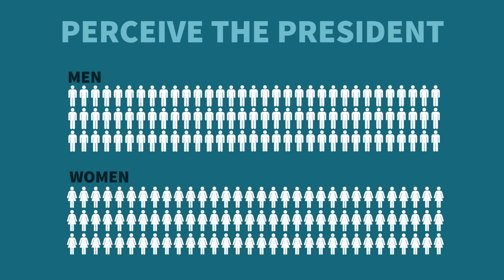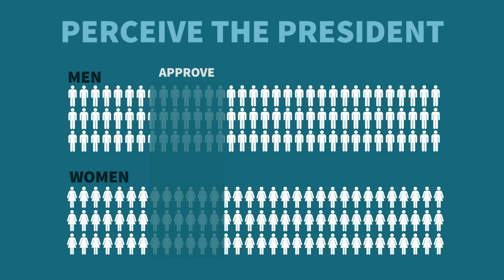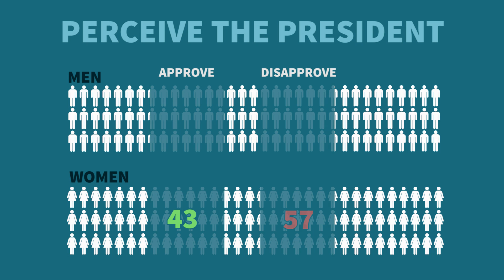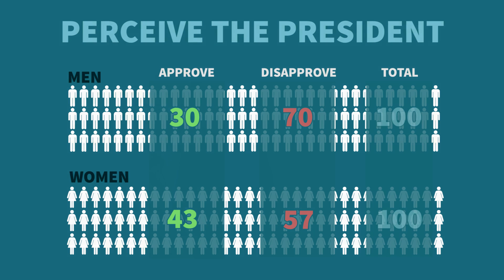From this table, we can concentrate on four new numbers: the number of women who approve of the president, the number of women who disapprove of the president, the number of men who approve, and the number of men who disapprove. From these raw frequencies, we can calculate further valuable information.